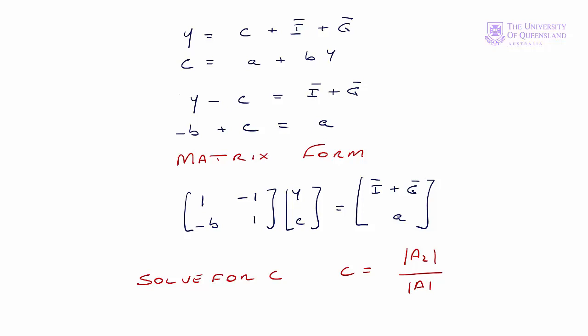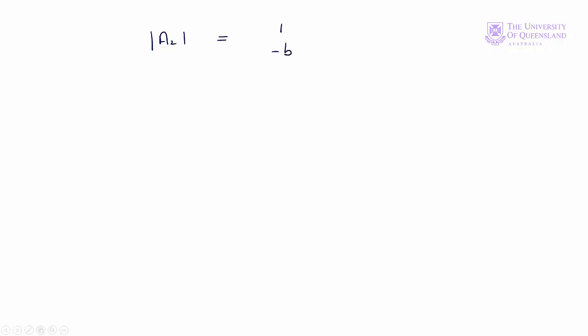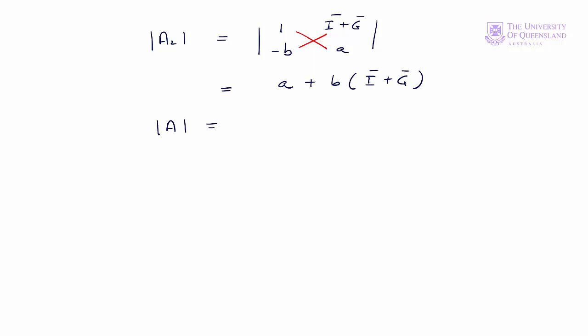The numerator is the determinant of A with column 2 replaced. Column 1 is the same — 1, minus b — and then in the second column we place i plus g and a, and take the determinant. That equals 1 times a minus b times (i plus g), which is a plus b(i plus g). The determinant of A has the second column as minus 1 and 1, giving 1 times 1 minus (minus b)(minus 1), which simplifies to 1 minus b.